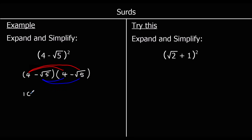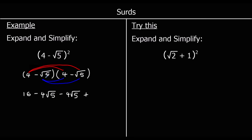And I've got 4 times negative root 5. A positive times a negative is a negative, so negative 4 root 5. Then I've got negative root 5 times 4 — a negative times a positive is a negative — so negative 4 root 5. And finally negative root 5 times negative root 5: a negative times a negative is a positive, and root 5 times root 5 is 5.